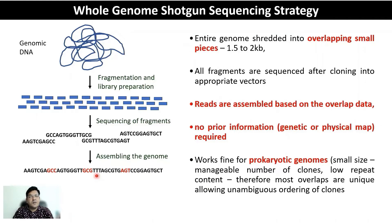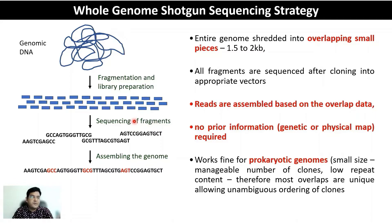Looking at the strategy of whole genome shotgun sequencing: the entire genome is shredded into overlapping small pieces 1.5 to 2 kb in length. All fragments are sequenced after cloning into appropriate vectors. Reads are assembled based on overlap data, looking for unique overlaps at ends of reads. Importantly, no prior information in terms of a genetic map or physical map is required, and this strategy works well for prokaryotic genomes, which have less repeat content and are smaller in size.